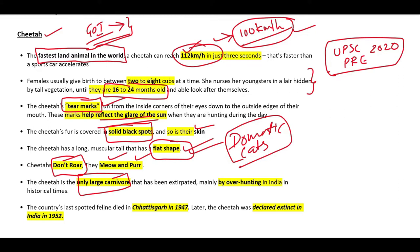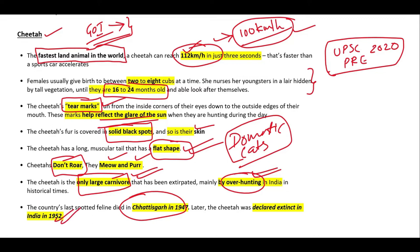The cheetah is the only large carnivore that has been declared extinct in India due to overhunting. This is the reason there is no presence of cheetah in India today. The cheetah was last seen in the state of Chhattisgarh in 1947, and in 1952 it was declared extinct.